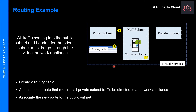So what are the steps you need to take? The first step is to create the Routes table. Then you will add a custom route that requires all private subnet traffic to be directed to the network appliance. And finally, you associate the new route to the public subnet. Please note that by default, using system routes, traffic would go directly to the private subnet. However, with a user-defined route, you can force the traffic through the virtual appliance.